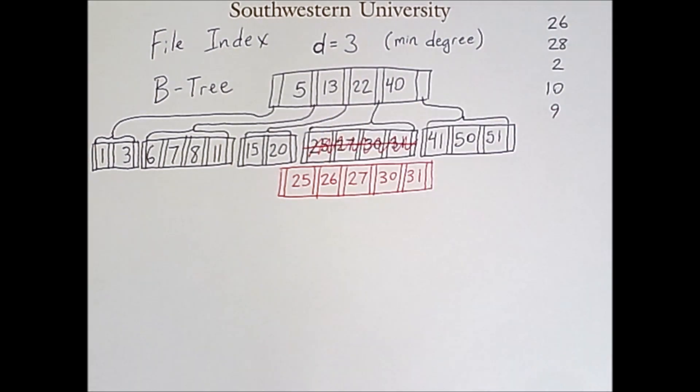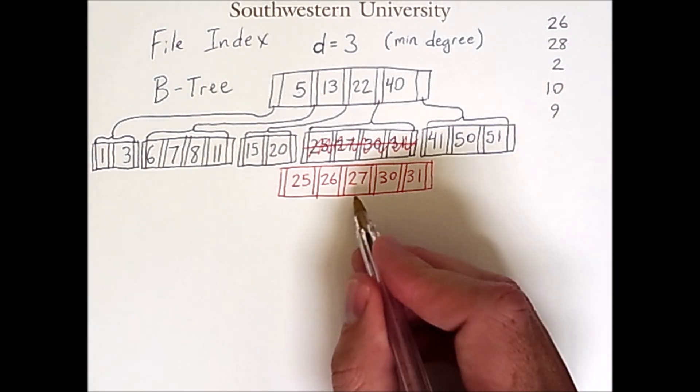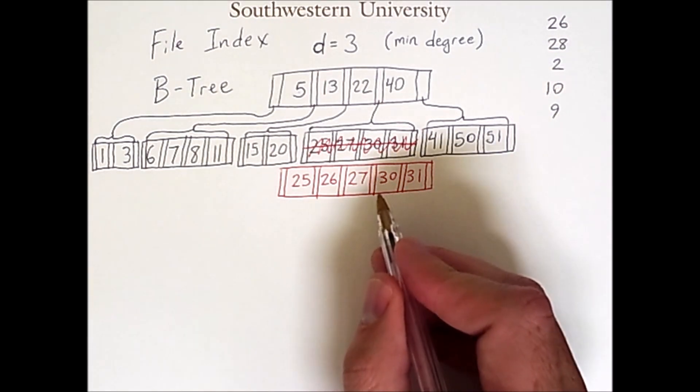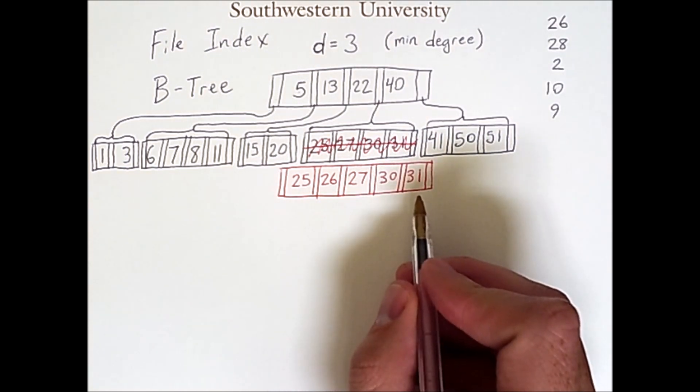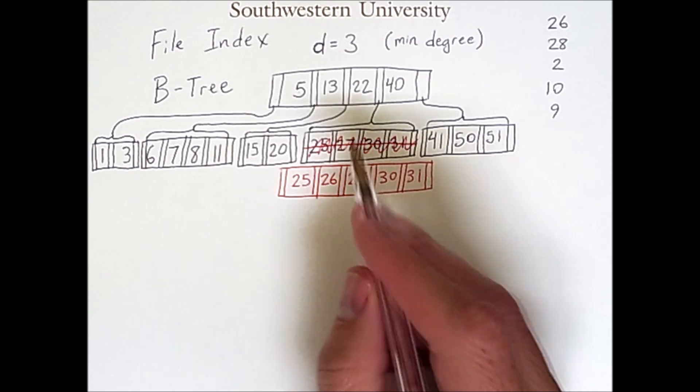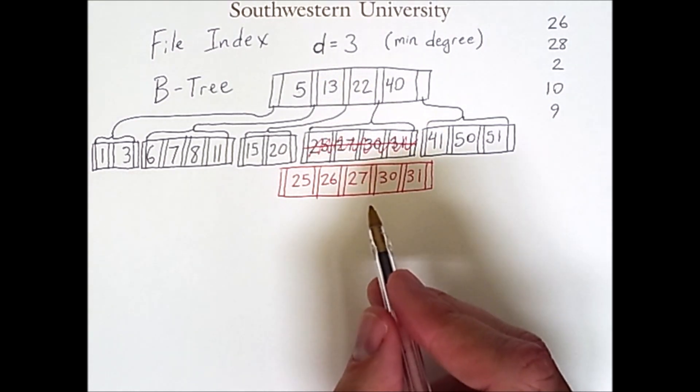Now when we add 28, something more interesting happens. We can't simply add 28 here between the 27 and the 30, because that would lead to six keys being in this node, and that violates our d restraint that says that we can have at most 2d minus 1 keys or 2d child links.